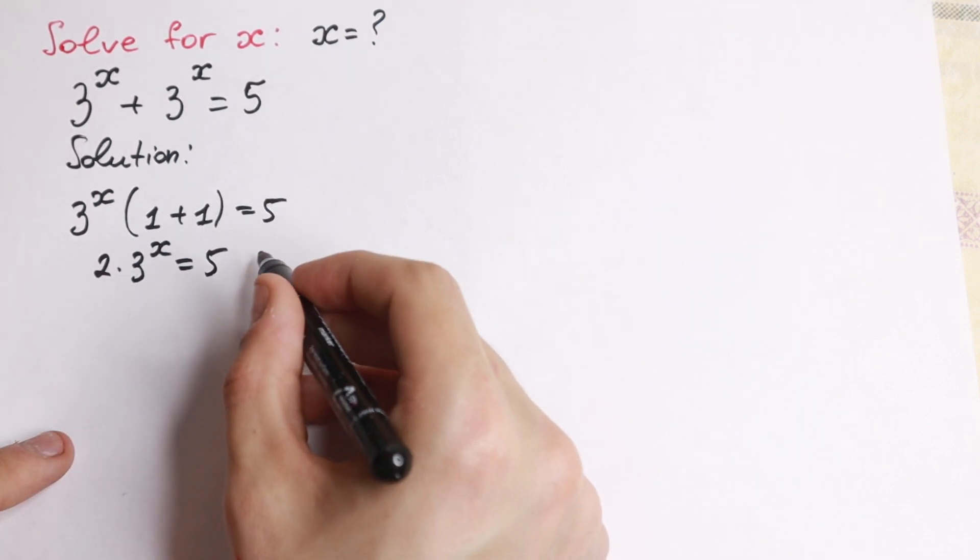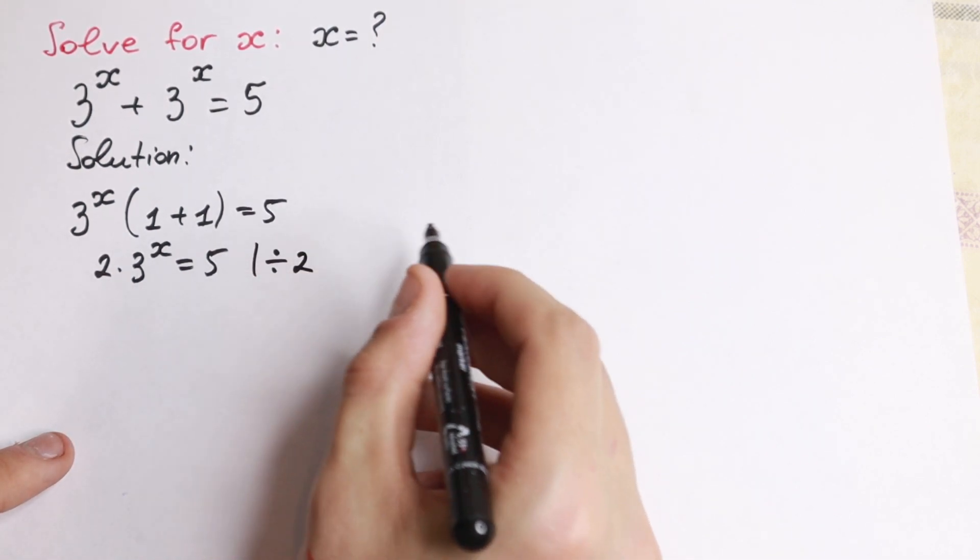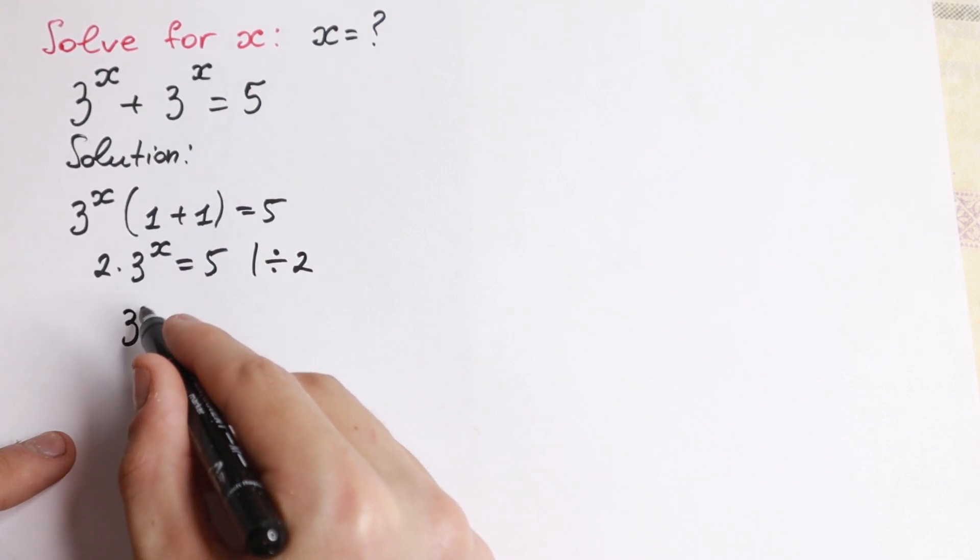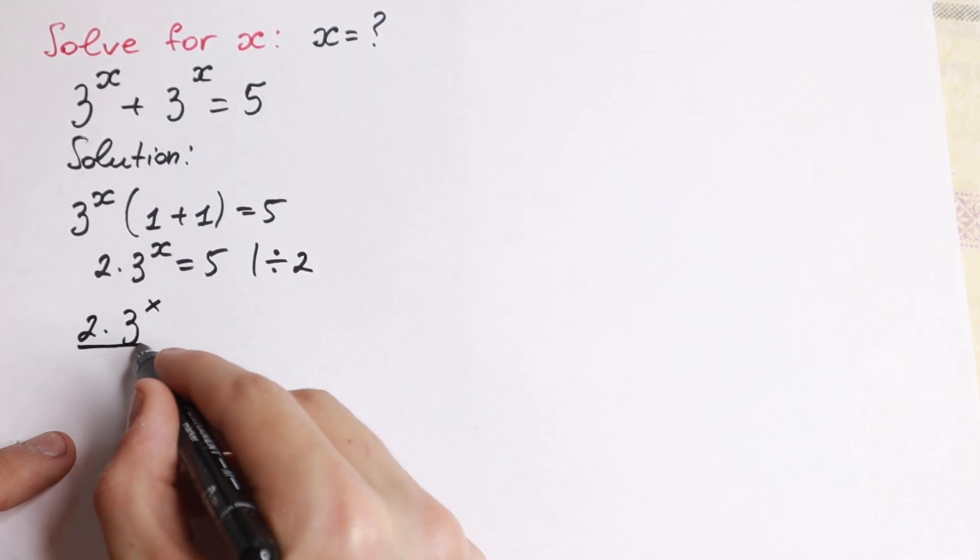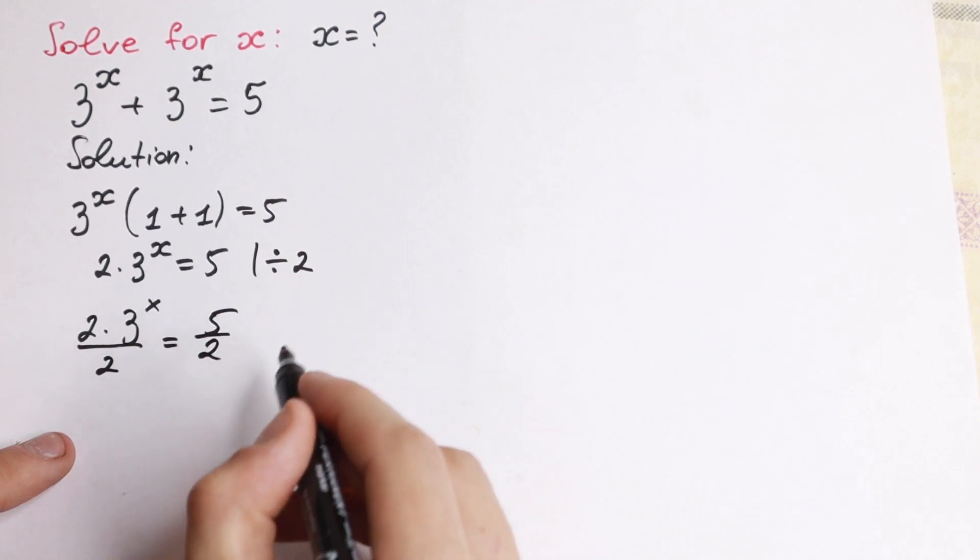Let's divide both sides by 2. If we divide by 2, we will have 3 to the x. 2 times 3 to the x divided by 2 equal to 5 over 2.